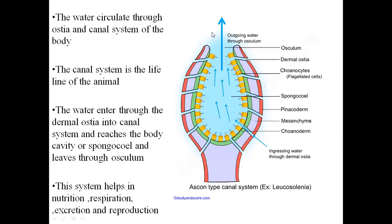Now we come to the canal system. The canal system is the lifeline of the sponge because functions like digestion, nutrition, respiration, and excretion are all carried out through it. Water enters through the ostia and pores into the body cavity of the sponge, and exits through a large outer opening called the osculum.